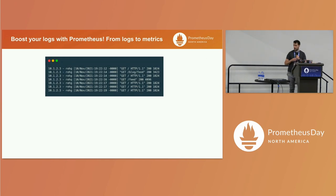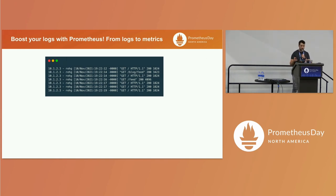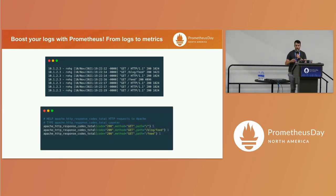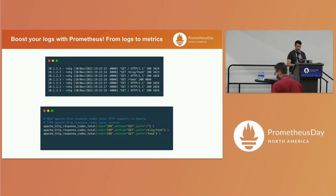We have our logs in our application, and as you can see, there is data information we can take advantage of. This is the final result we are looking for: we have our metric description, and we have labels inside this metric - as we can see, the method, the path that we are requesting.